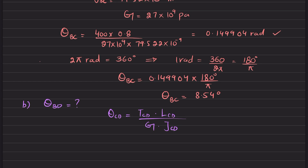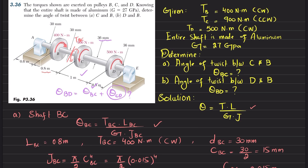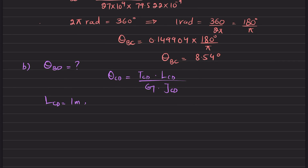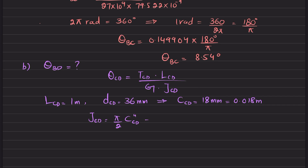L_CD is given as 1 meter. The diameter of CD is 36 mm, so the radius r_CD equals 18 mm, or 0.018 m. The polar moment of inertia J_CD equals pi over 2 times (0.018)^4, which gives J_CD = 164.896 × 10^-9 m^4.